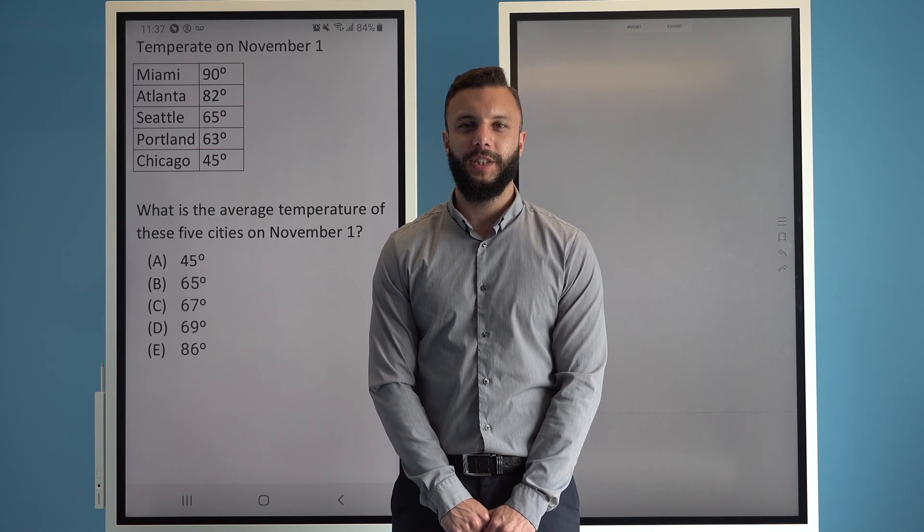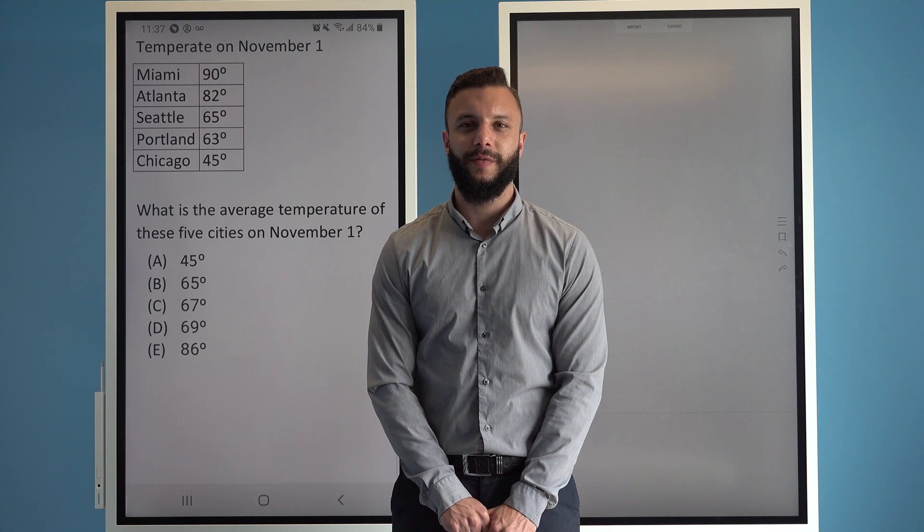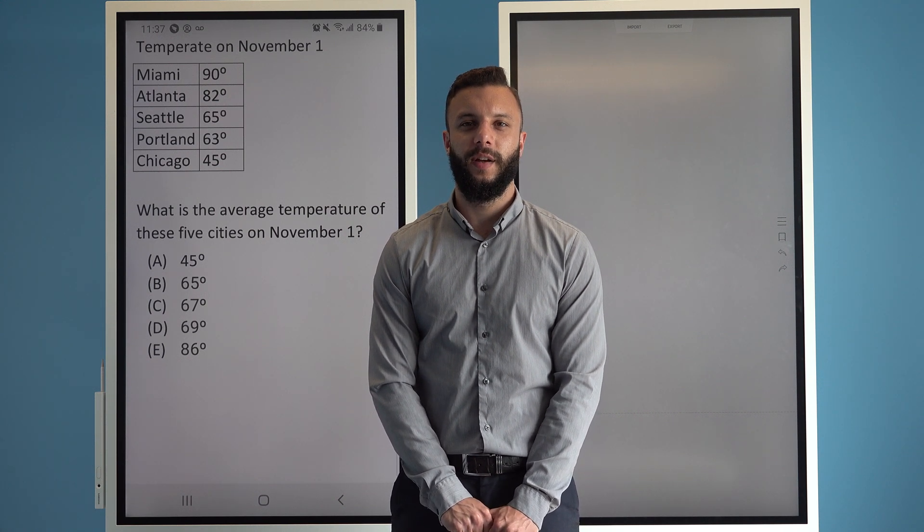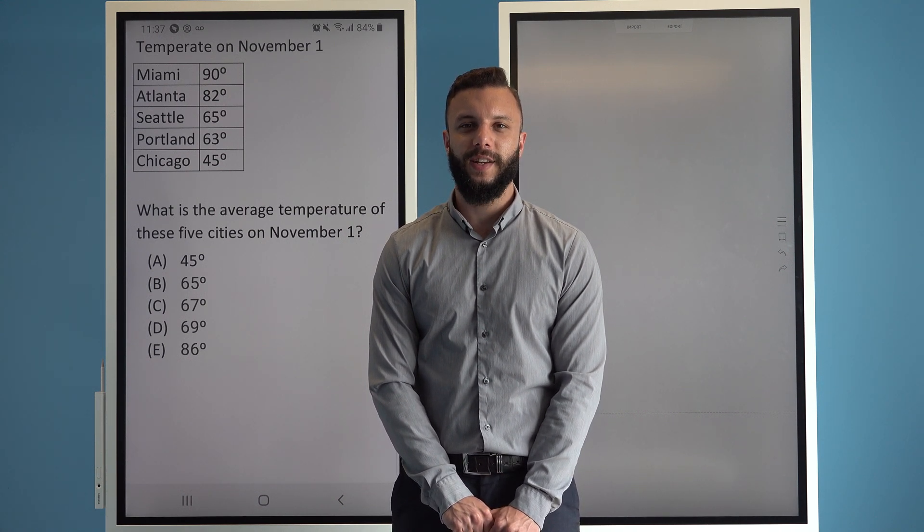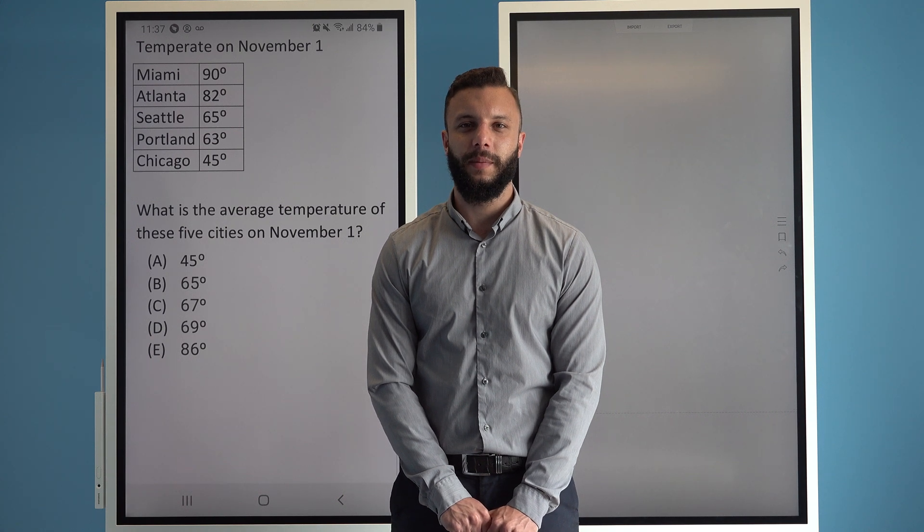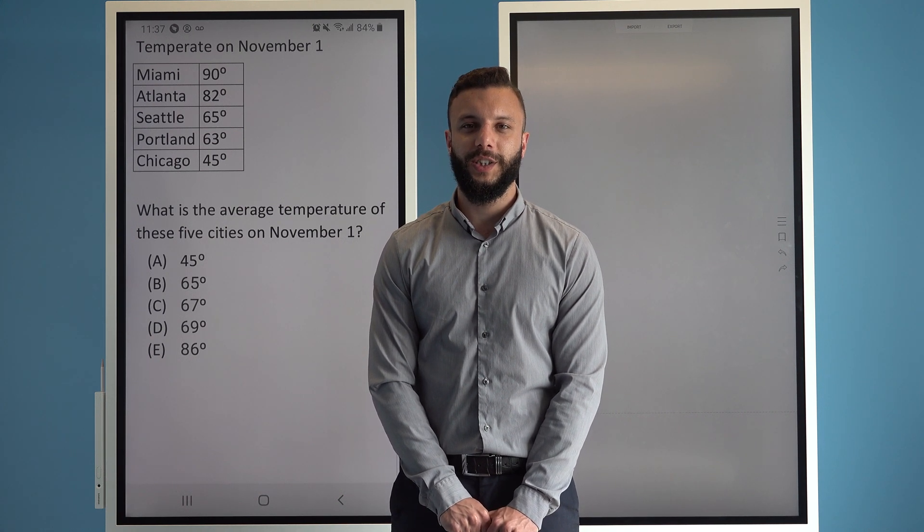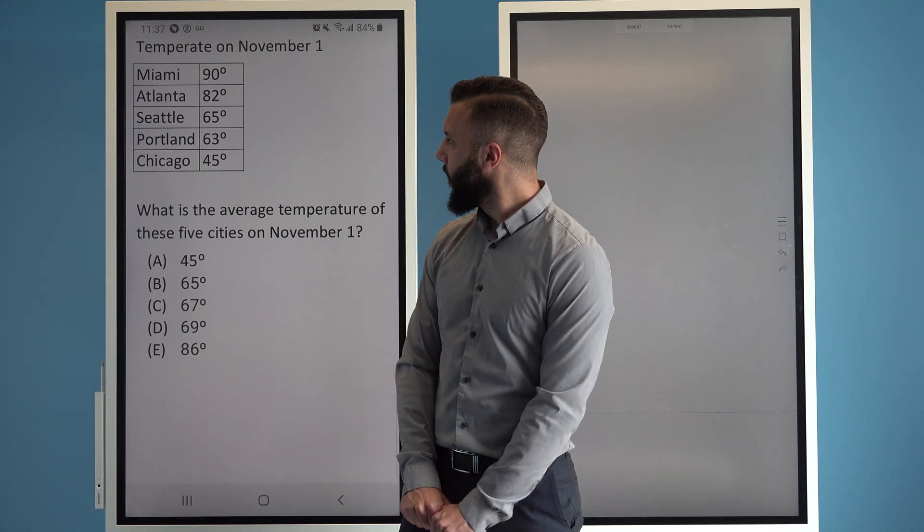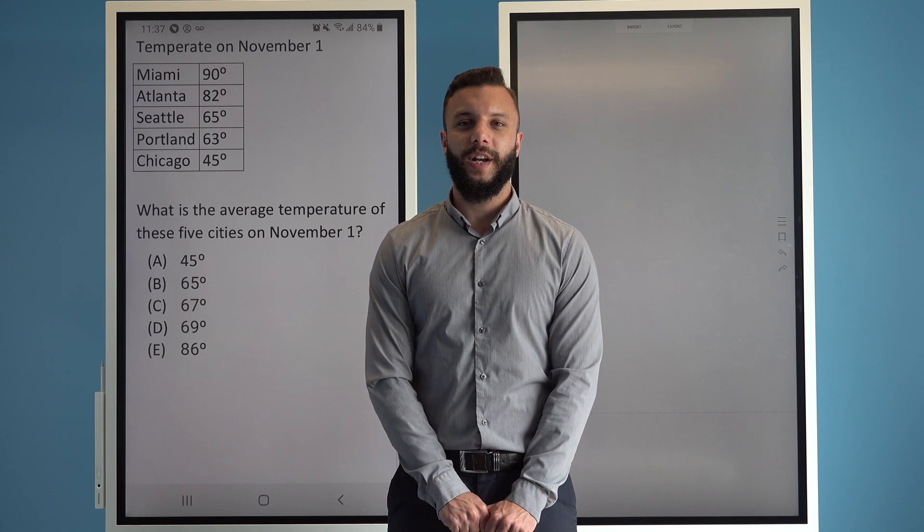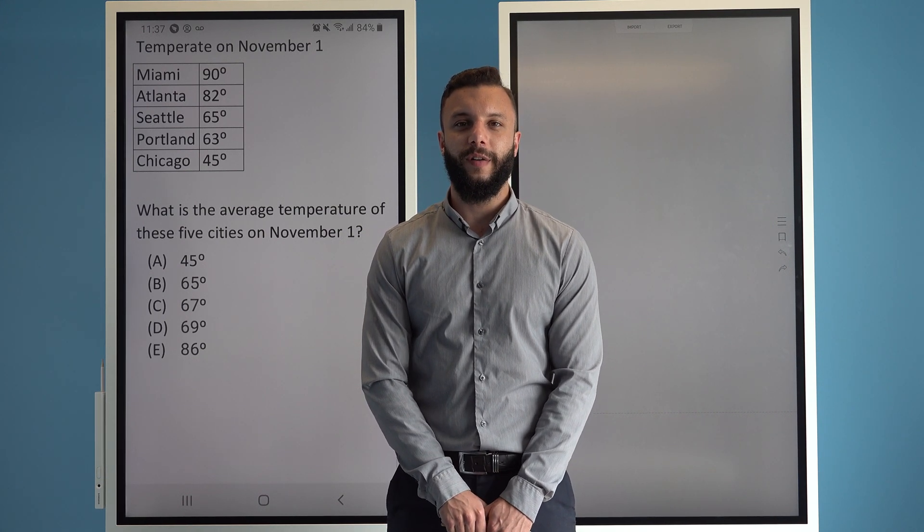When we're asked to find the average, if it does not specify which type of average we will default to the mean. The mean is found by adding all the values together and dividing by how many values we have. We're told in the question that there are five cities, so we will be dividing by five once we add all of our values together.